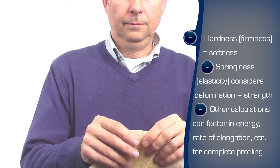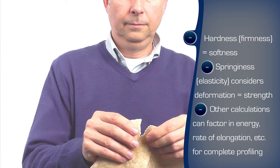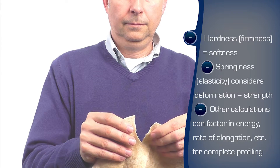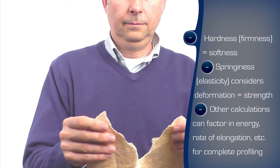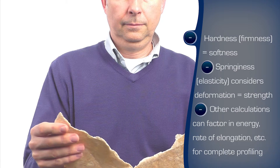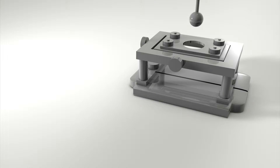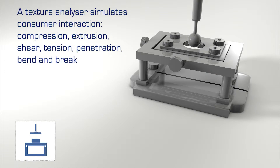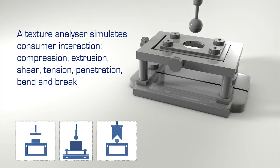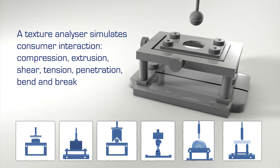For a tortilla, softness and strength convey the freshness and suitability for its purpose. A texture analyzer enables the measurement of attributes which reflect the consumer's experience by simulating the interaction: compression, extrusion, shear, tension, penetration, bend, and break.